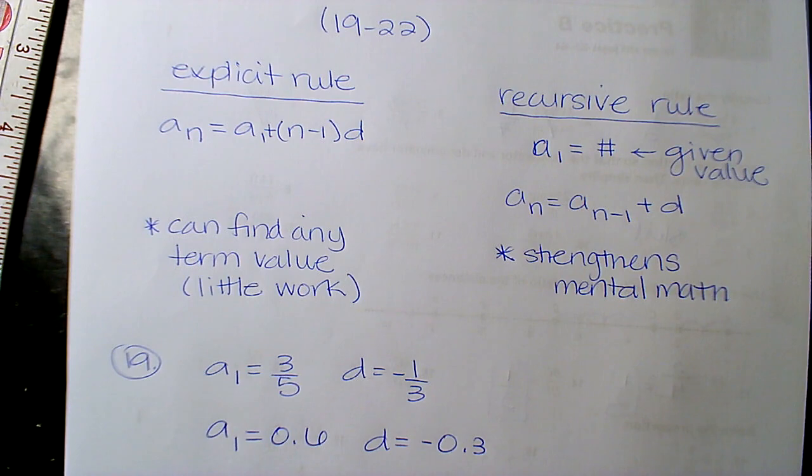If I was to ask for the 75th term for recursive, well, that's a problem because if all you got was the very first term, you notice it's A sub 1, you would have to do A1, A2, A3, A4, A5, all the way to A74 to get A75. Or you figured it out in your head and you kick in your mental math. So that's the downside to recursive.